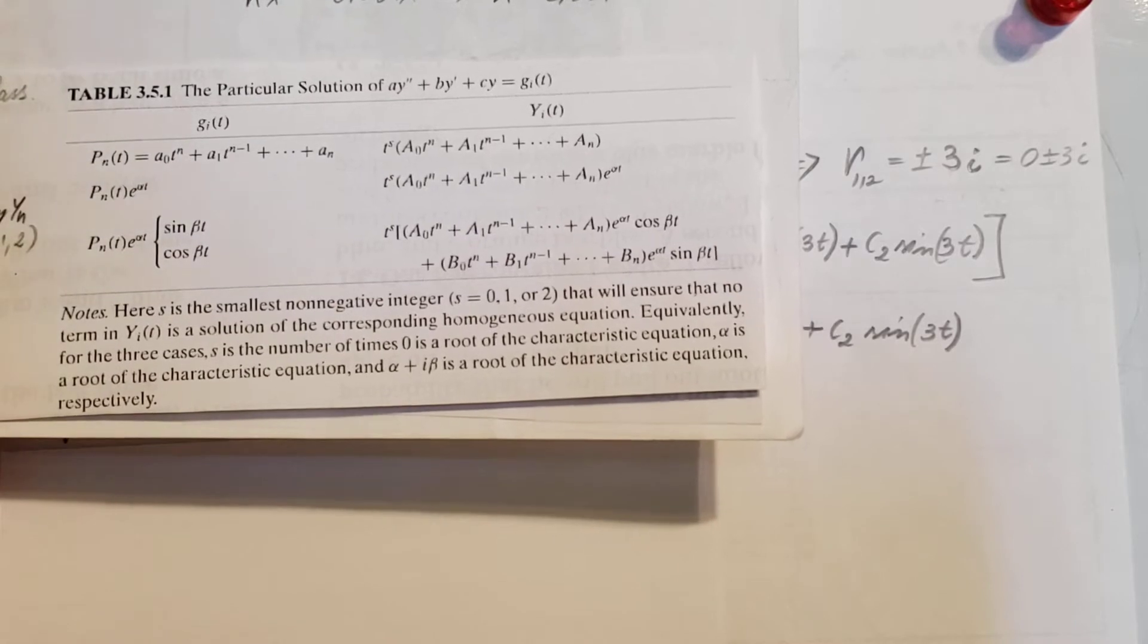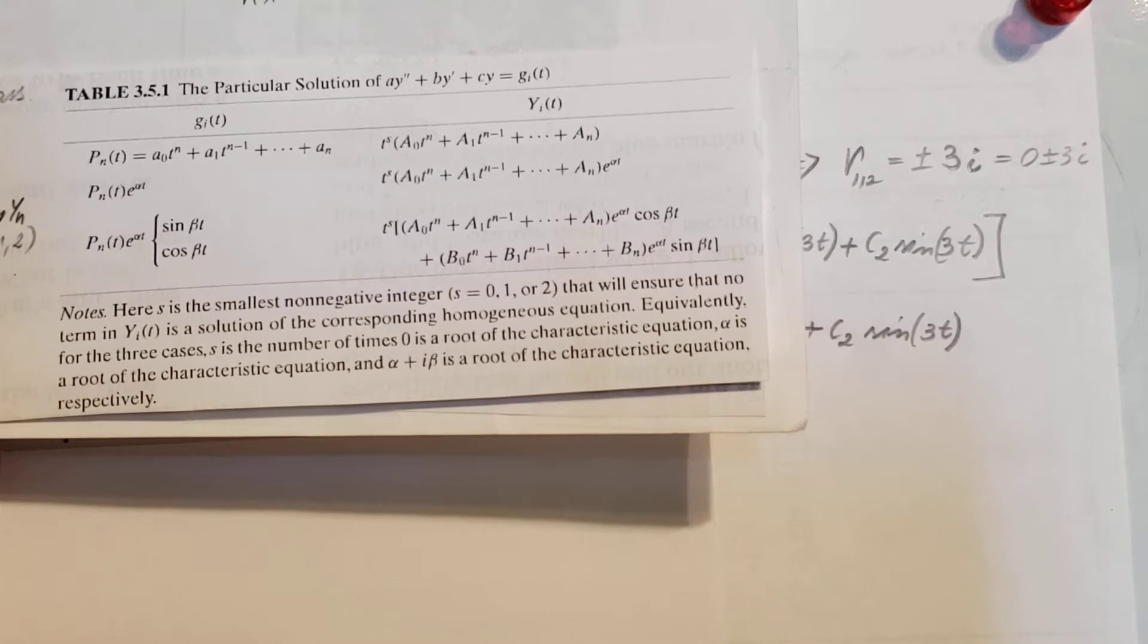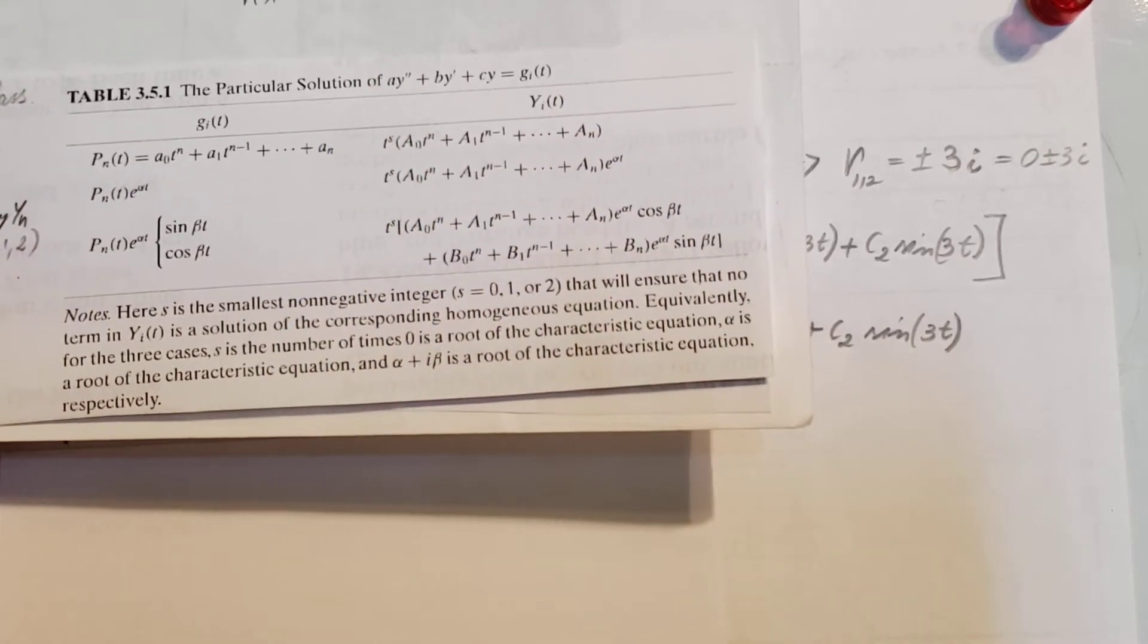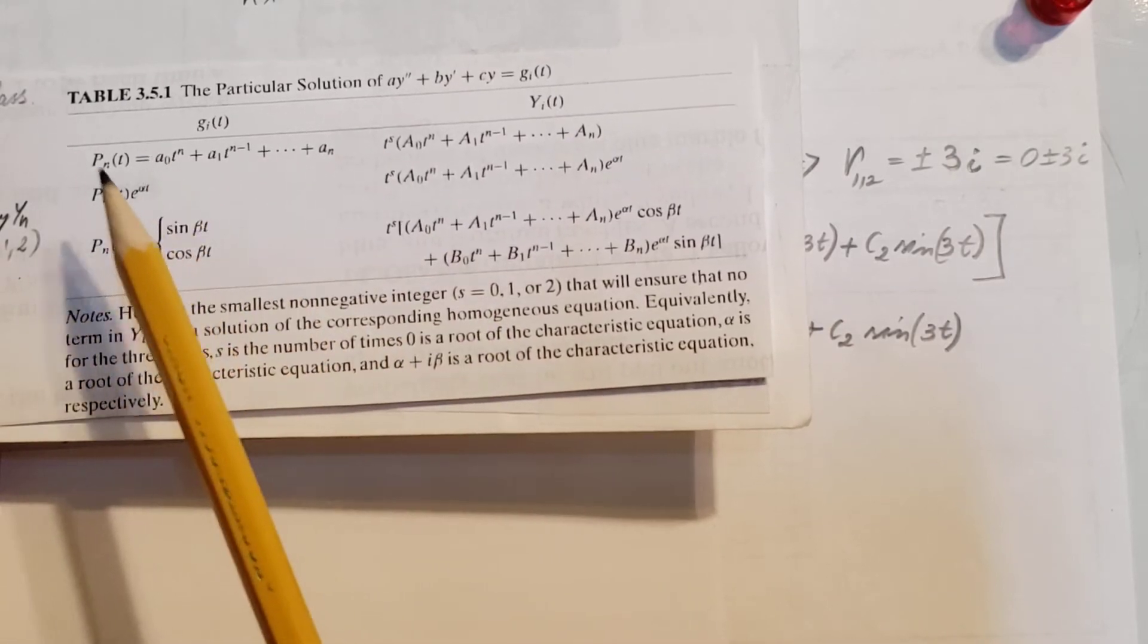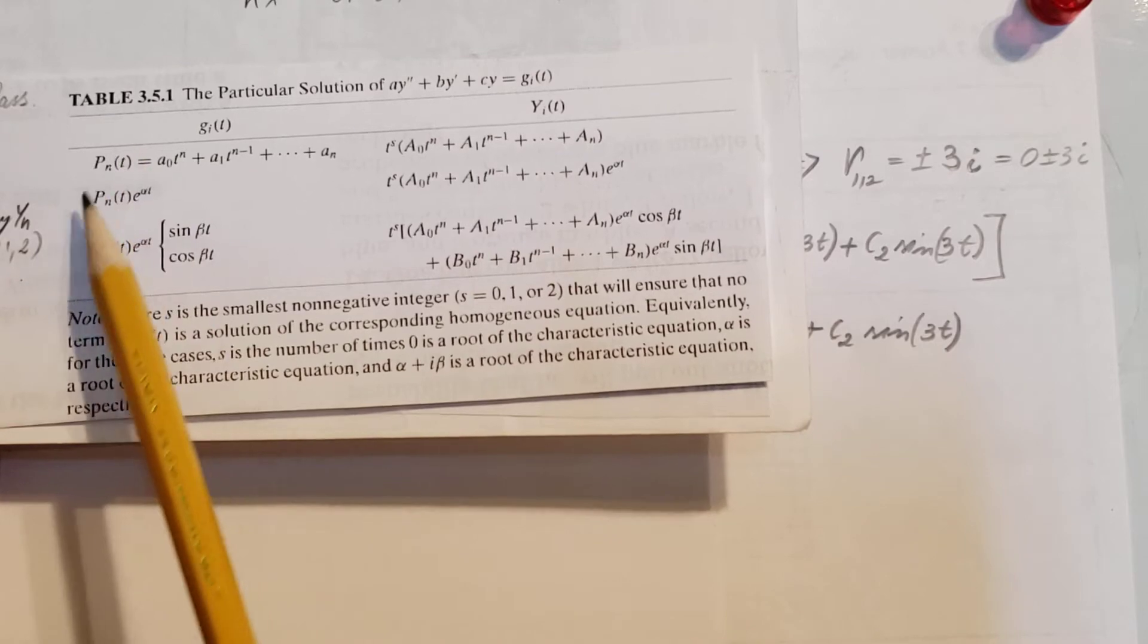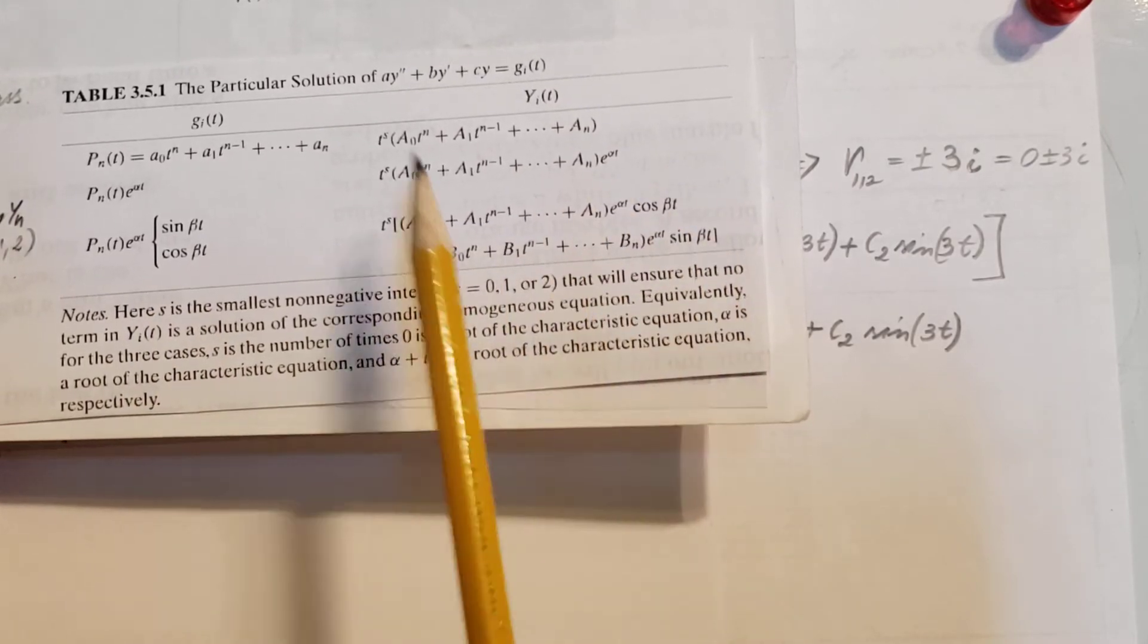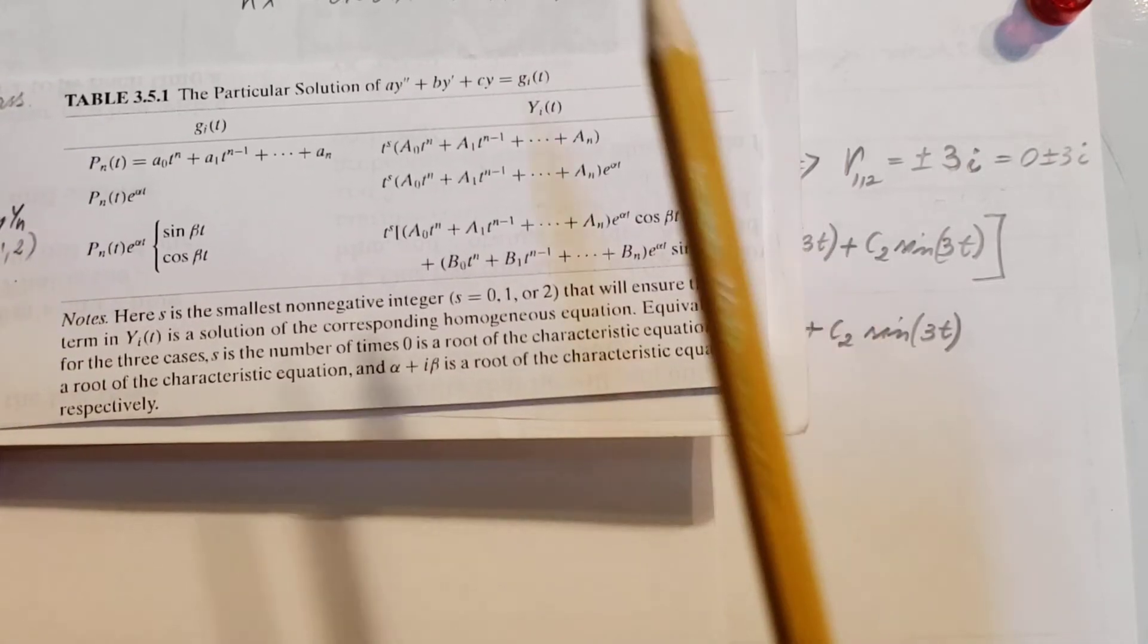Let's find our particular solution now. Most textbooks will have some kind of table where they sum up the options for the undetermined coefficient method. If you have a polynomial, this is what you guess. If you have polynomial and exponential, you guess this. If you have polynomial, exponential, and sinusoid, they'll give you this to guess for the right-hand side.